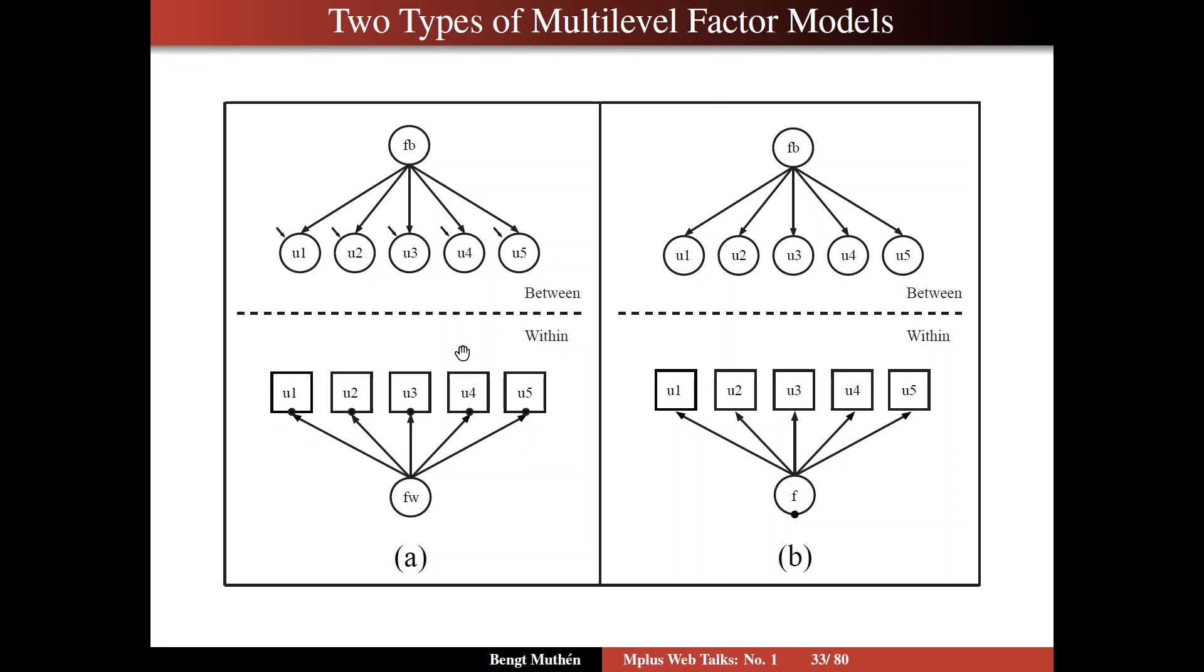Now, we have a clean separation of within and between variation. Now, in the IRT setting, we put the random intercept not on the items. There's not an item-specific random intercept, but a random intercept for the factor. So a dot down here, and that dot is the F between factor.